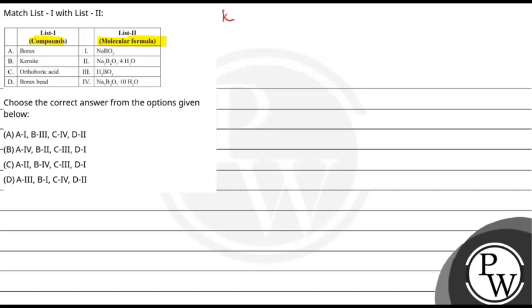So here we need the key concept. That is compounds of boron. So boron is a group 13 element. So we need to know which compounds, one by one we need to know.